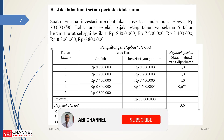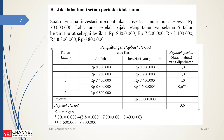Bagaimana jika laba tunai setiap periode tidak sama? Ini suatu rencana investasi membutuhkan investasi mula-mula sebesar 30 juta. Laba tunai setelah pajak setiap tahunnya selama 5 tahun berturut-turut sebagai berikut. Ini jika laba setiap periode tidak sama, diestimasi 8 juta dan seterusnya. Kemudian perhitungannya dimasukkan ke dalam rumus, masukkan ke matriks, jadinya seperti ini. Yang tanda bintang 1 itu: 30 juta adalah investasi awal dikurangi 8.800.000, 7.200.000, tambah 8.400.000.